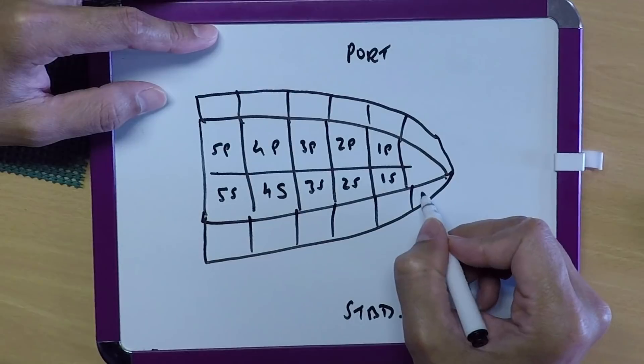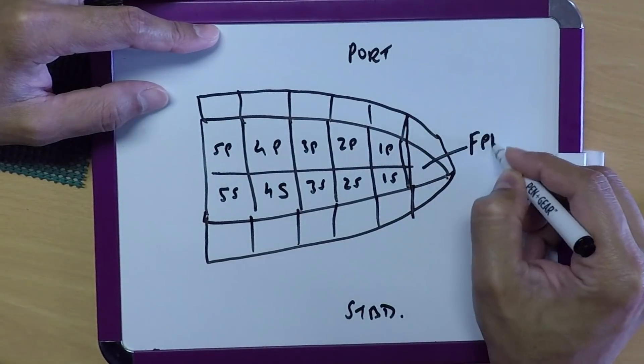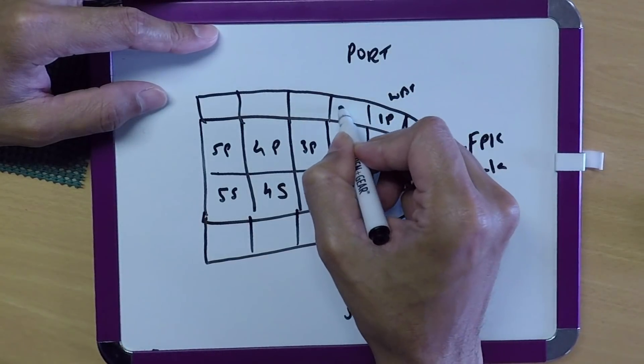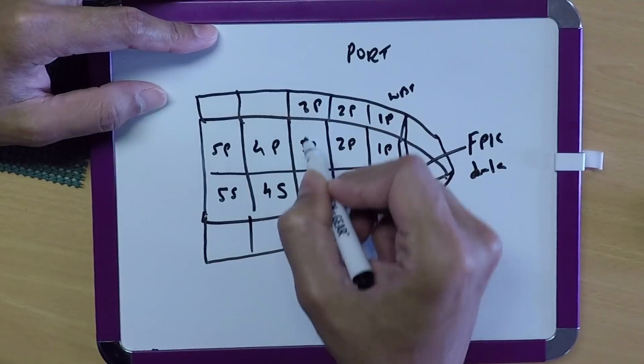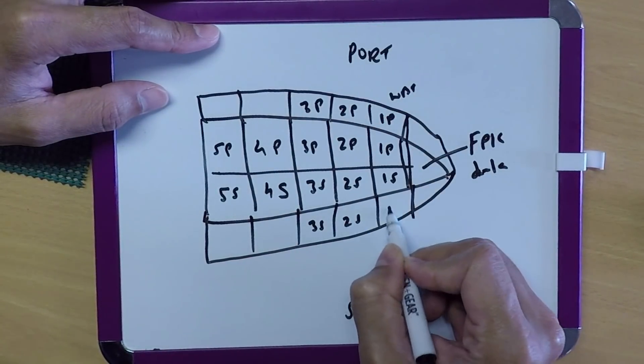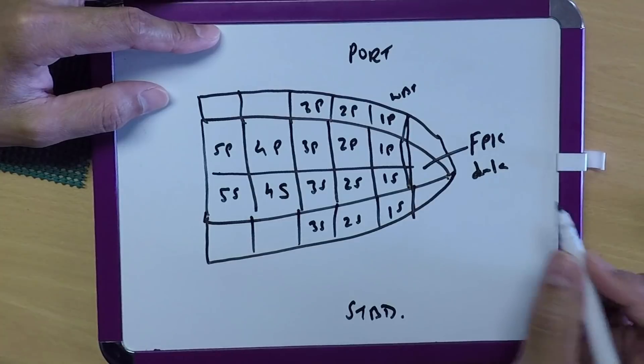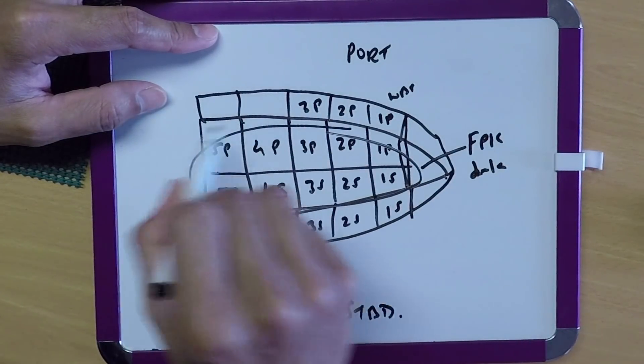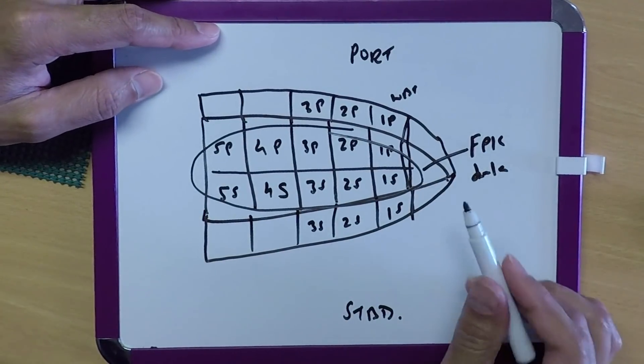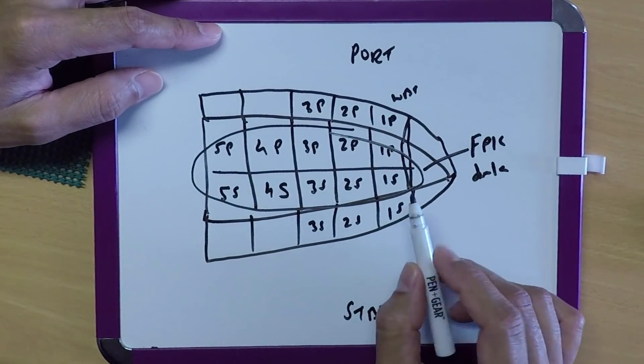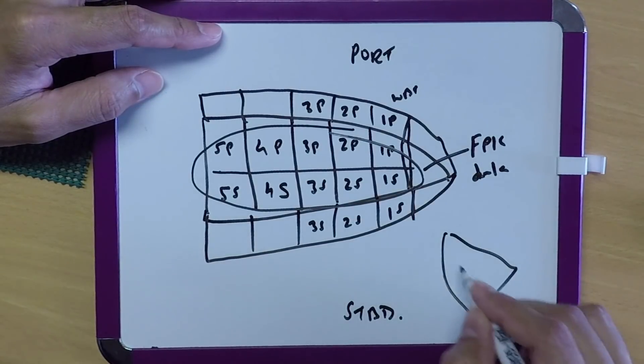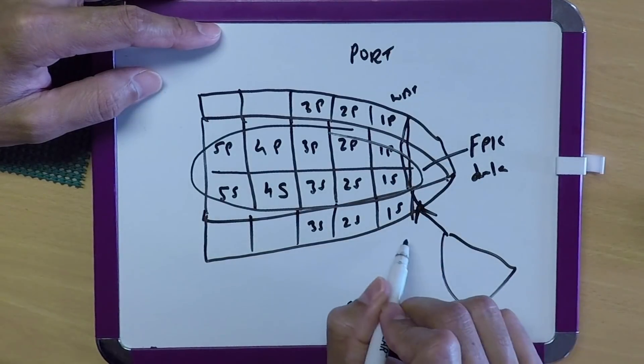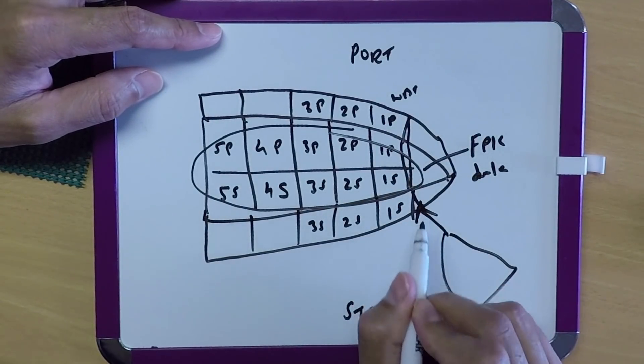These are here. You have a fore peak tank, then here you have one port water ballast, two port, three port. Similarly on this side, three starboard, two starboard, one starboard. So basically all these cargo tanks are protected all around by water ballast tanks. So this design for the ship is done so that in case there is a rupture, in case we have a collision with another ship and it makes some damage here, then the cargo should not go into the sea. The damage will be on to the ballast tanks and probably we lose some ballast.